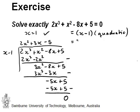Now this means that I can write my cubic as x minus 1 times 2x squared plus 3x minus 5.